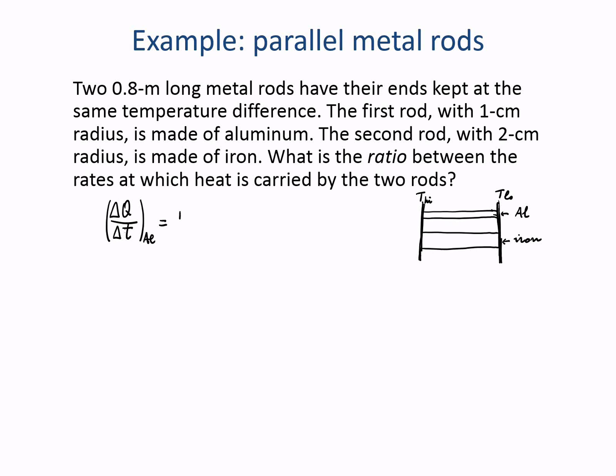For aluminum, it's going to be the thermal conductivity of aluminum times the cross-sectional area of the aluminum rod times delta T divided by the length. By the way, the length is the same, so we can just call it L without subscripts.